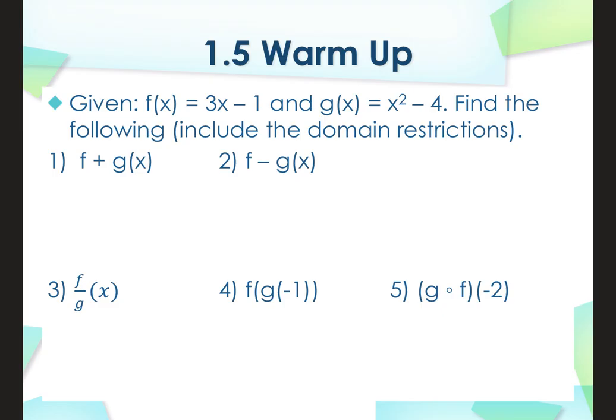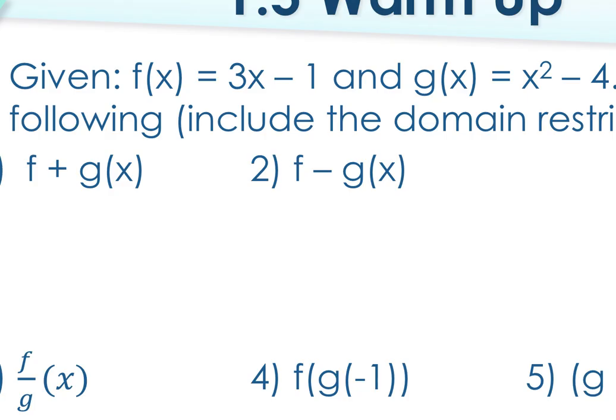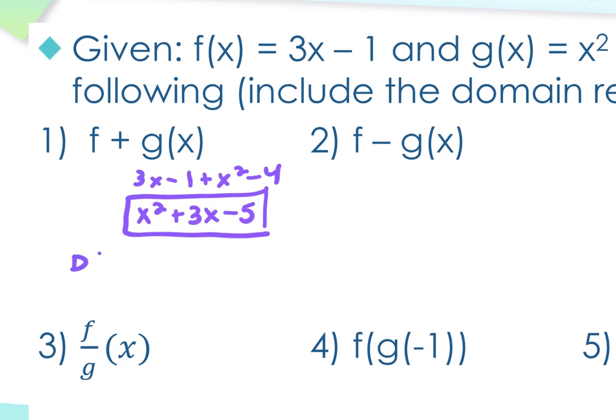You definitely want to review how to pull information from a graph. So number 1 literally just says find F plus G, but in the instruction it says make sure you include the domain restrictions. So the adding, we would simply just add those two expressions together. I'd get 3x minus 1 plus x squared minus 4, and then I just put it in decreasing degree order and combine my like terms. So x squared plus 3x minus 5 is what you should get for the sum of those two. And then you want to include domain restrictions. Nothing in my original F of x or G of x, right? And then we didn't introduce anything here. So the domain here is negative infinity to positive infinity.